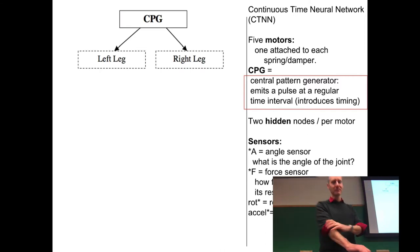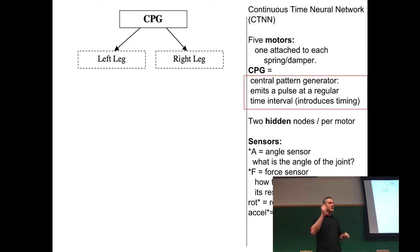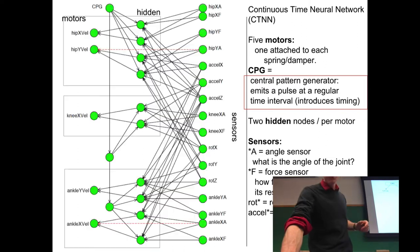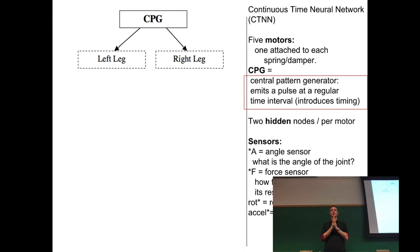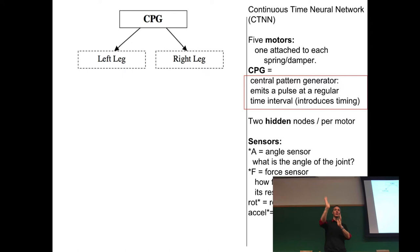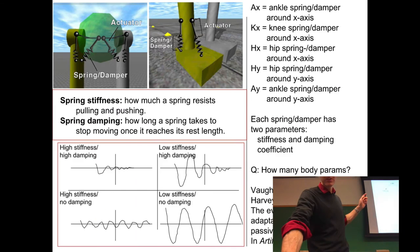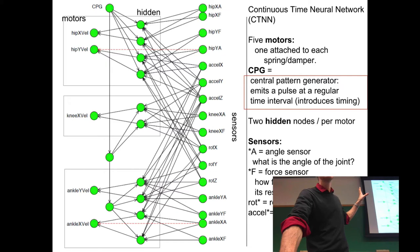The CPG is like a conductor. Two identical neural circuits — one for the left leg, one for the right — receive alternating pulses from the CPG: left leg, you do your thing now; right leg, you do your thing now. What the legs actually do when they receive the CPG signal depends on the evolved synaptic weights.